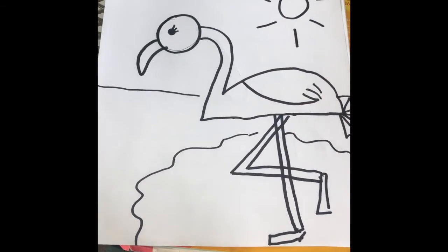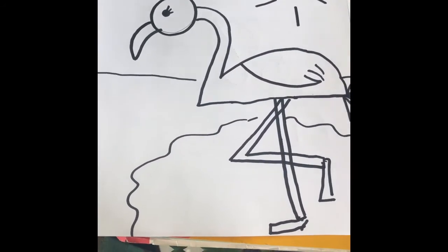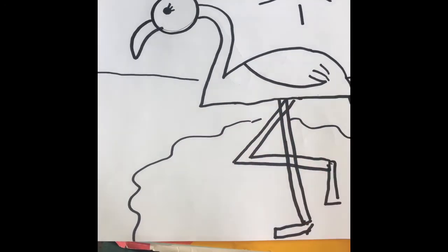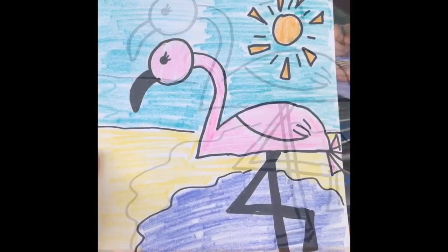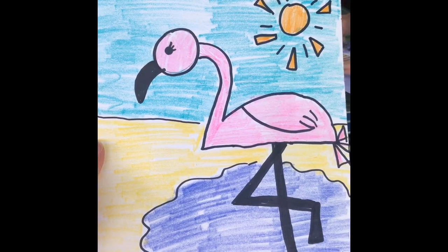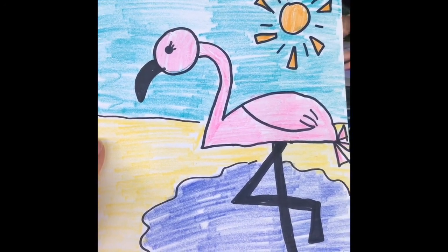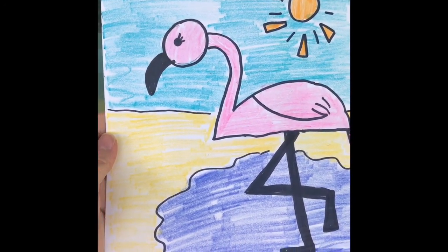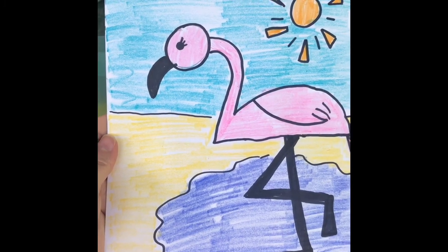So you can go ahead and add any other little details you want to yours. I'm going to add some color and some other details. And I'll show you my finished product in a minute. So I added some color to my flamingo. And little flamingo is ready to go. I hope you enjoyed this activity. And I will see you next week.